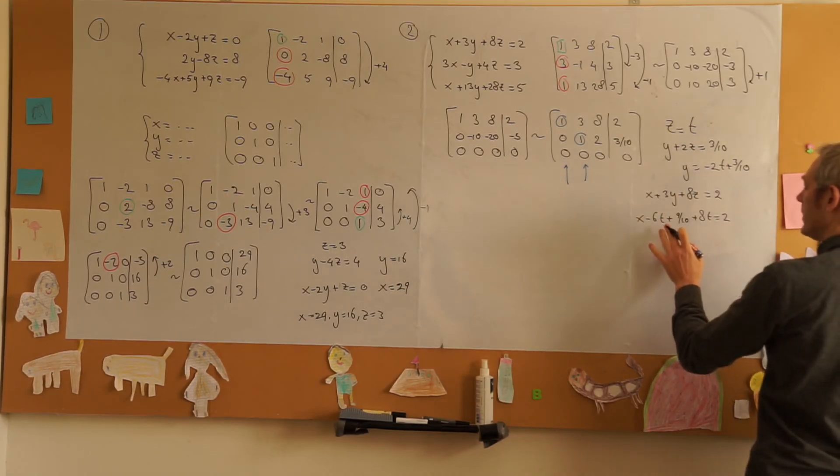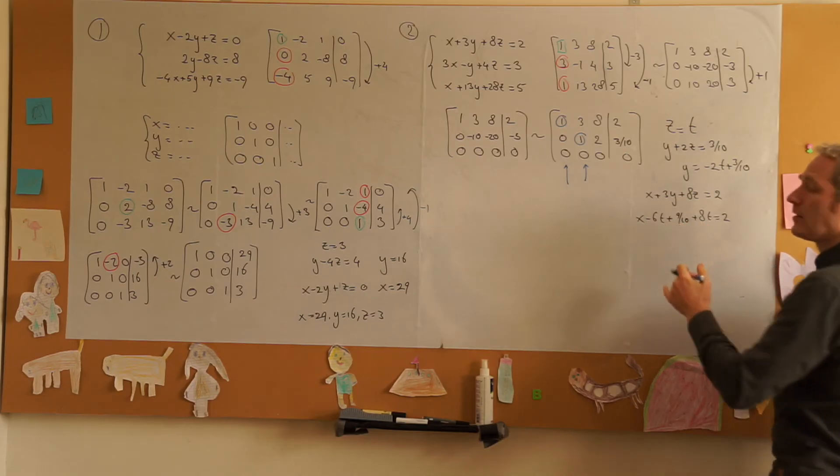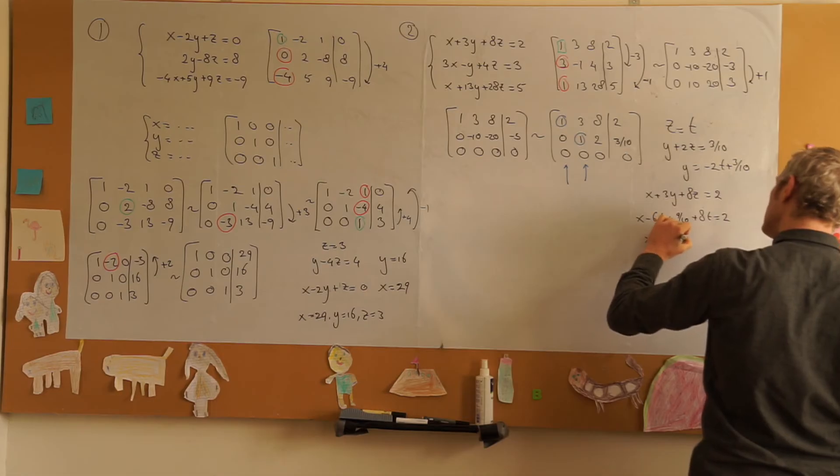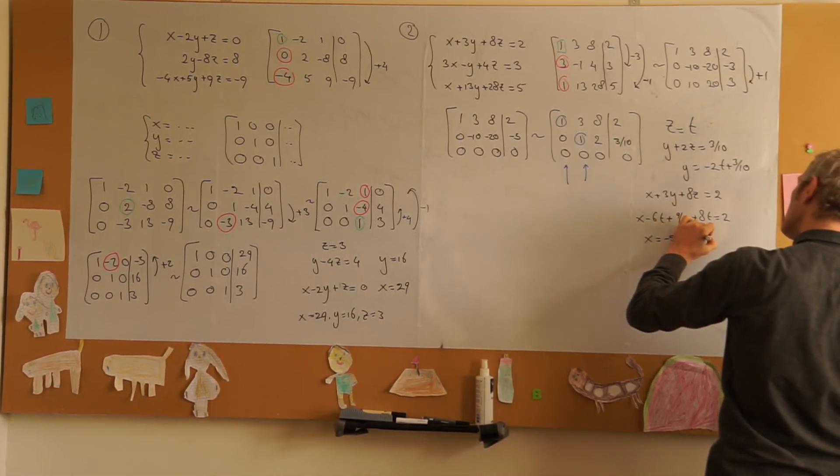Move everything to the other side. So minus 6 plus 8 is 2t which goes to the other side. x is equal to minus 2t plus 11 over 10.